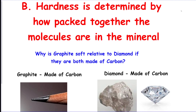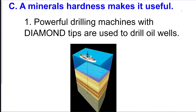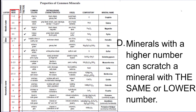Hardness is about how packed the molecules are. For example, graphite and diamond are both made of carbon, but diamond has the carbon more packed together — that's what makes it stronger and rarer. We use minerals based on their hardness to help drill down into sections of rock, because adding minerals with high hardness makes the drill more powerful. There's your hardness column on the chart.